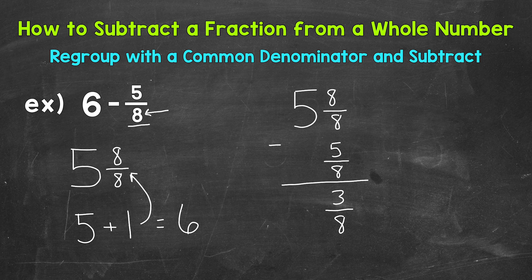And then we can take a look at the whole number. So we have 5 minus, and then we don't have a whole number there. So we just drop our 5 down. And we get an answer of 5 and 3 eighths.